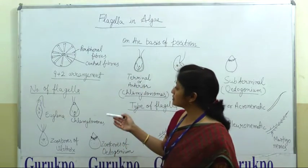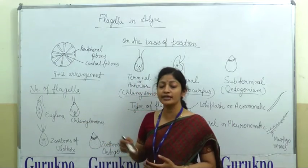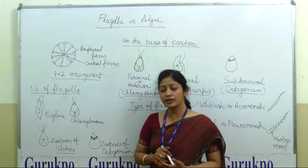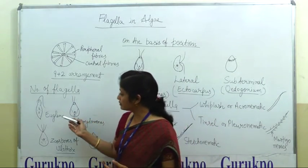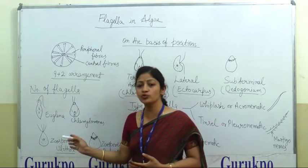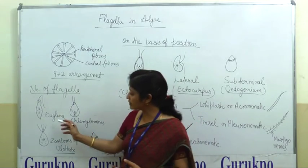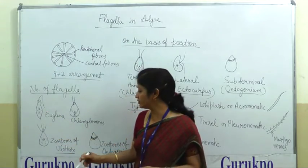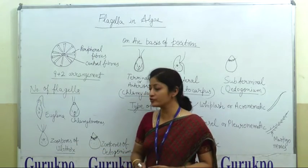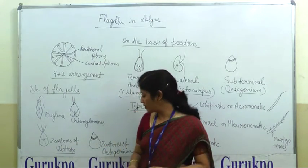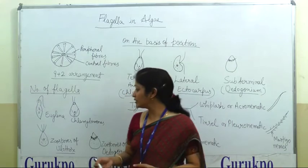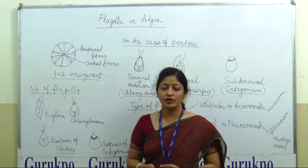We will now discuss classification on the basis of number of flagella. In Algae, the number of flagella may vary — it may be one, two, four, or many. For example, in Euglena the number of flagella is one; in Chlamydomonas it is two; in zoospores of Ulothrix it is four; and in zoospores of Oedogonium it is many. This criteria is important for classification.